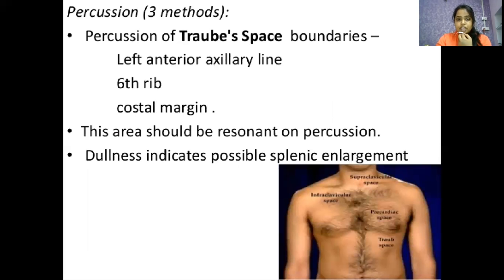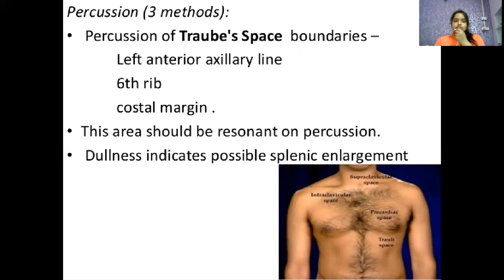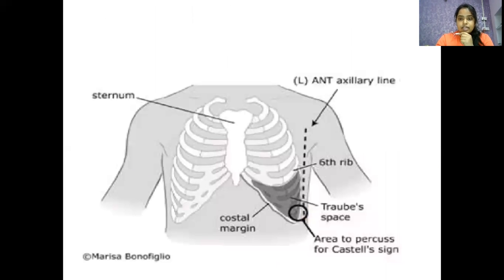Percussion has three methods. First method: percuss along the left anterior axillary line between the sixth rib and costal margin — this area, known as Traube's space, should be resonant on percussion. Dullness indicates possible splenic enlargement.